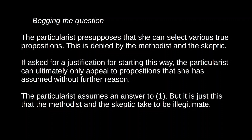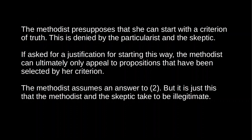Similarly, let's take Methodism. The Methodist presupposes that she has a criterion of truth. Particularists and sceptics deny that we have an independent answer to question two. And if we ask the Methodist for a justification for this criterion, she can only appeal to propositions that have been selected by that criterion itself. So the Methodist is just assuming an answer to the second question. What reasons can the Methodist offer for starting in this way? She can only offer propositions judged legitimate by the criterion she started with — which the particularist and the sceptic will take to be illegitimate. So Methodism seems to beg the question against particularism and scepticism.